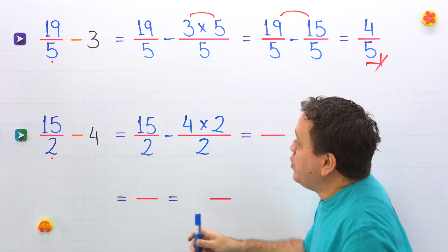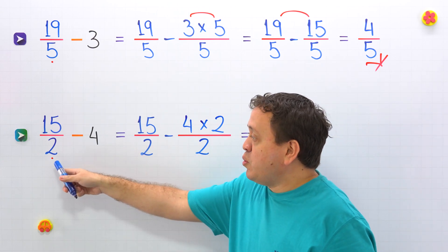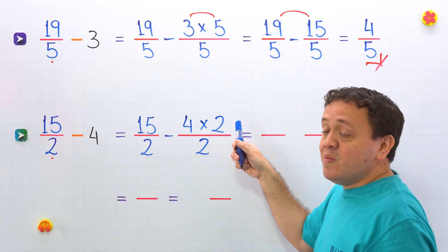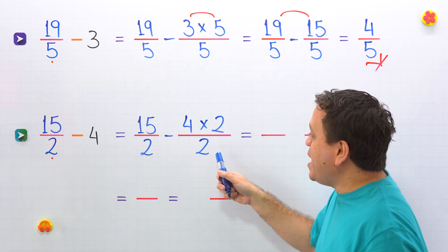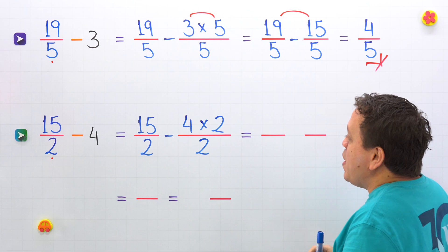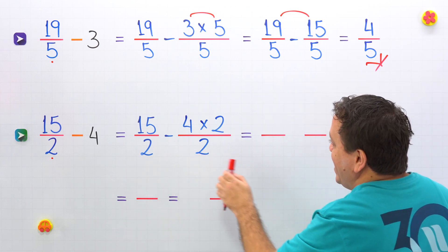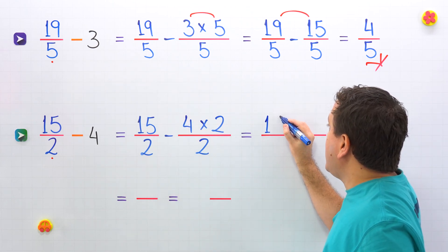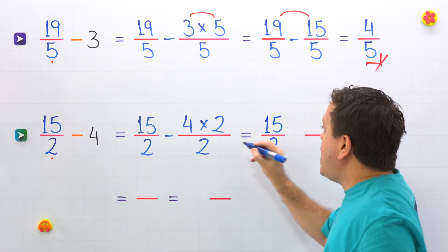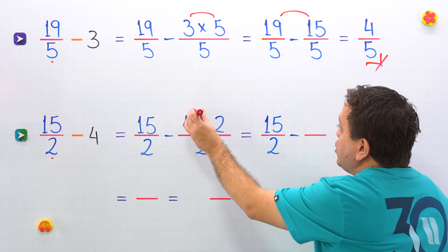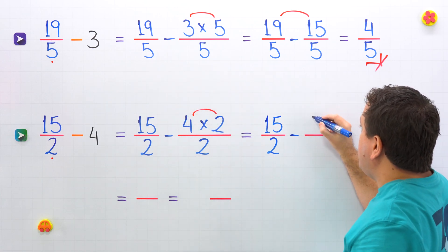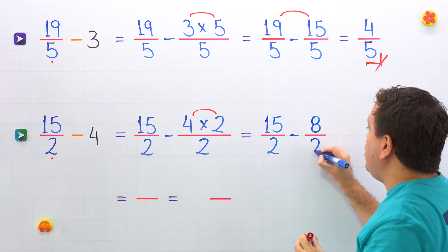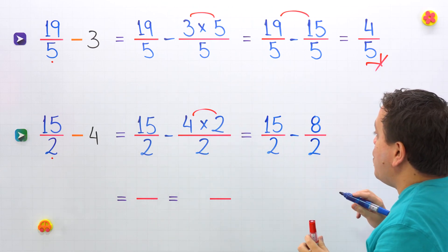To convert the whole number 4 to a fraction with a denominator of 2, we multiply 4 by 2 and then we divide this product by 2. Now we have two fractions with the same denominator.